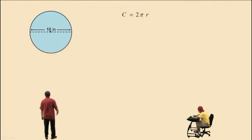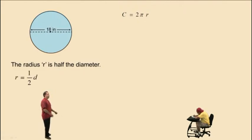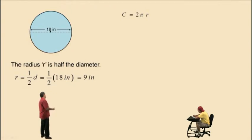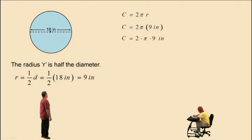Since we're given the diameter, we have to find the radius. Remember, the radius is one-half of the diameter. That means we take one-half times the diameter — one-half times 18 is 9 inches. So let's replace r with 9 inches. We have 2 times pi times 9 inches, and our final answer is 18 times pi inches.